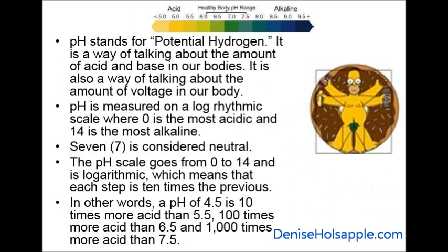Next, I'd like to talk to you about pH. pH is a big buzzword these days and I wanted to talk about it a little differently. What is pH? pH stands for potential hydrogen. It is a way of talking about the amount of acid and base in our bodies, and it is also a way of talking about the amount of voltage in our body — which is not what you hear about regularly. pH is measured on a logarithmic scale where 0 is the most acidic and 14 is the most alkaline.